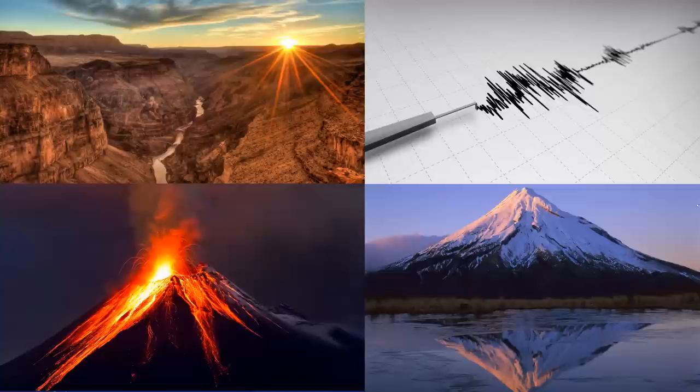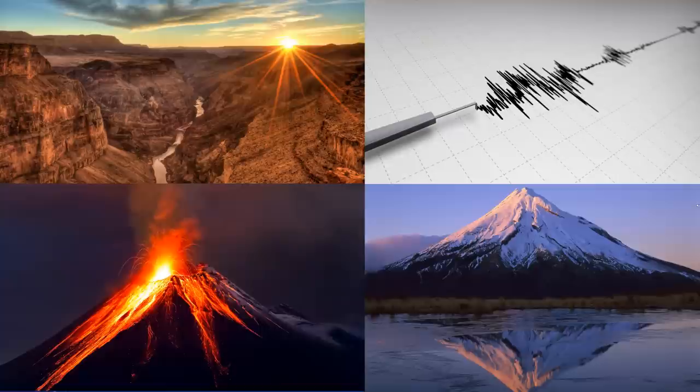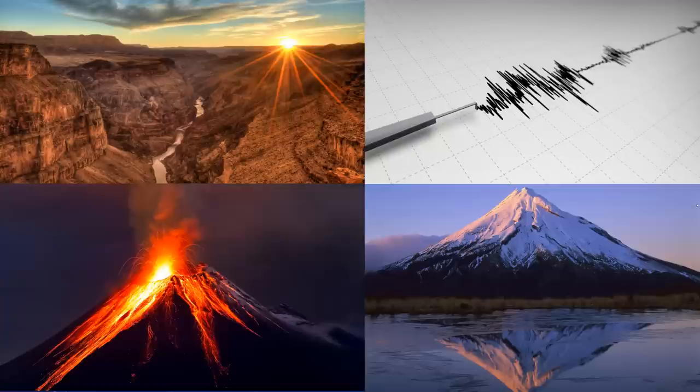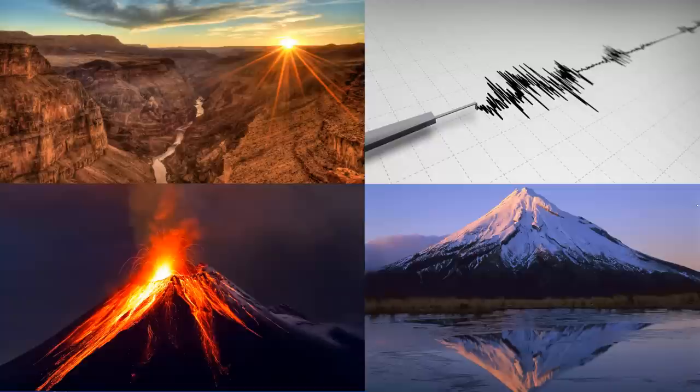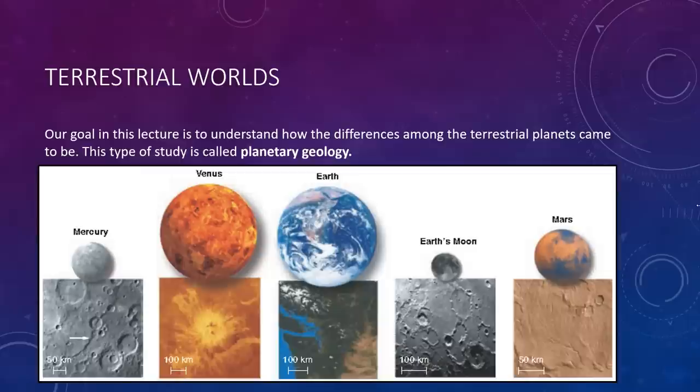Earth is not alone in having undergone tremendous change since its birth. The surfaces of all five terrestrial worlds—Mercury, Venus, Earth, the Moon, and Mars—have looked much similar when they were young. All five were made of rocky material that condensed in the solar nebula, and all five were subjected to early impacts of the Great Bombardment. The significant differences in their present-day appearance must therefore be the result of changes that have occurred through time. Ultimately, these changes must be traceable to fundamental properties of the planets.